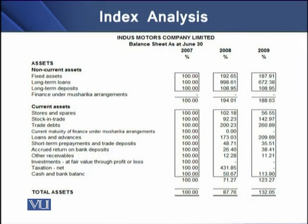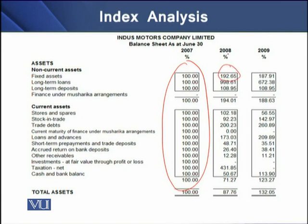On screen, you can see the balance sheet of the asset side index analysis. You can see that 2007 values have been fixed as the base year, and 2008 and 2009 are compared to 2007. For fixed assets, dividing the 2009 value by the 2007 value gives a result of 192.65.